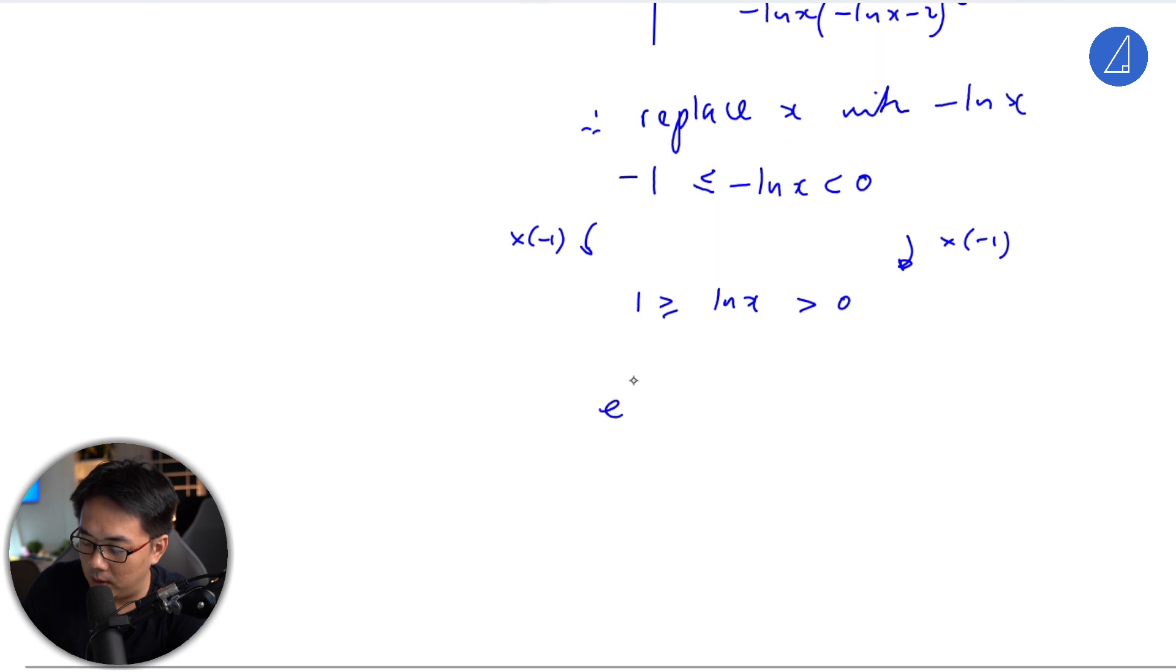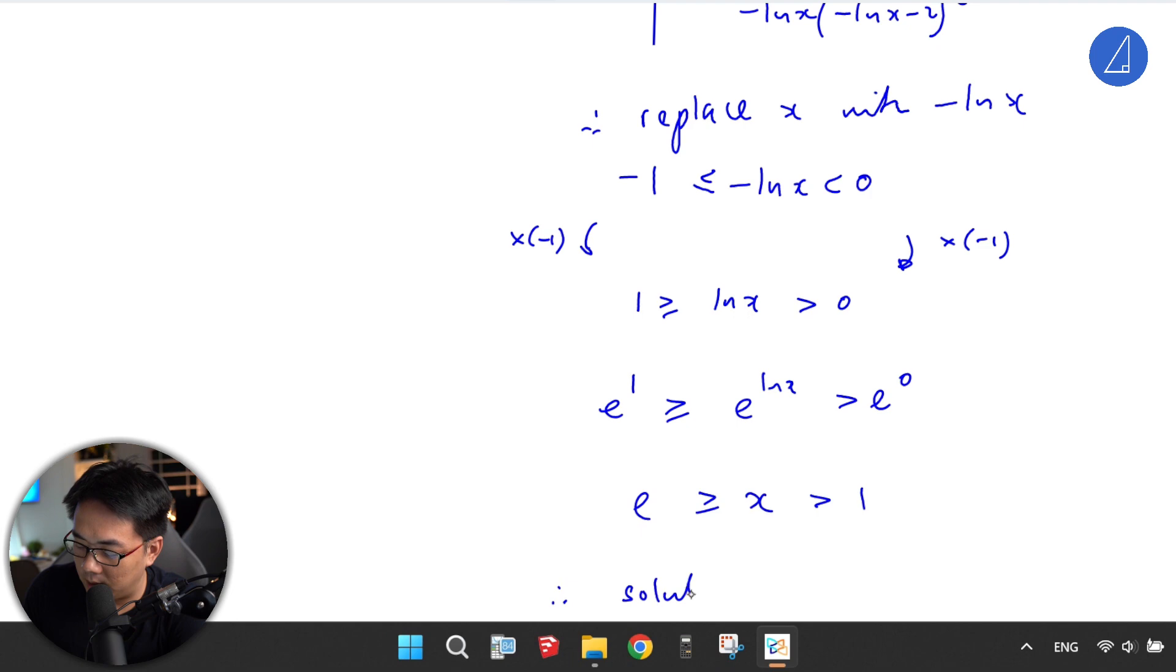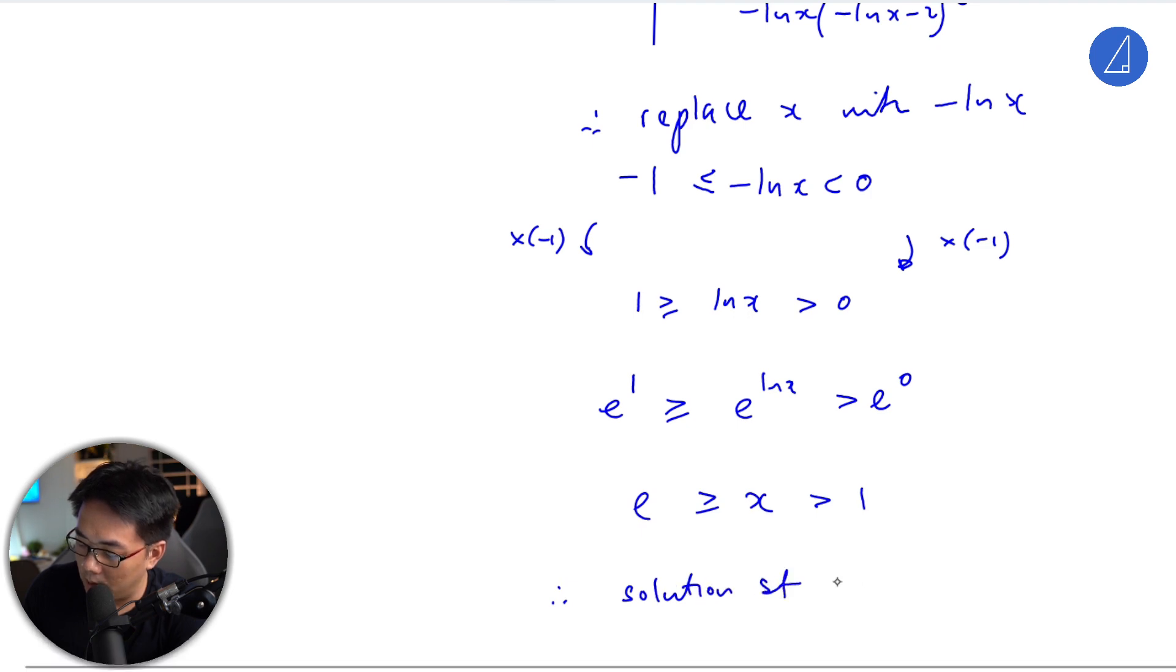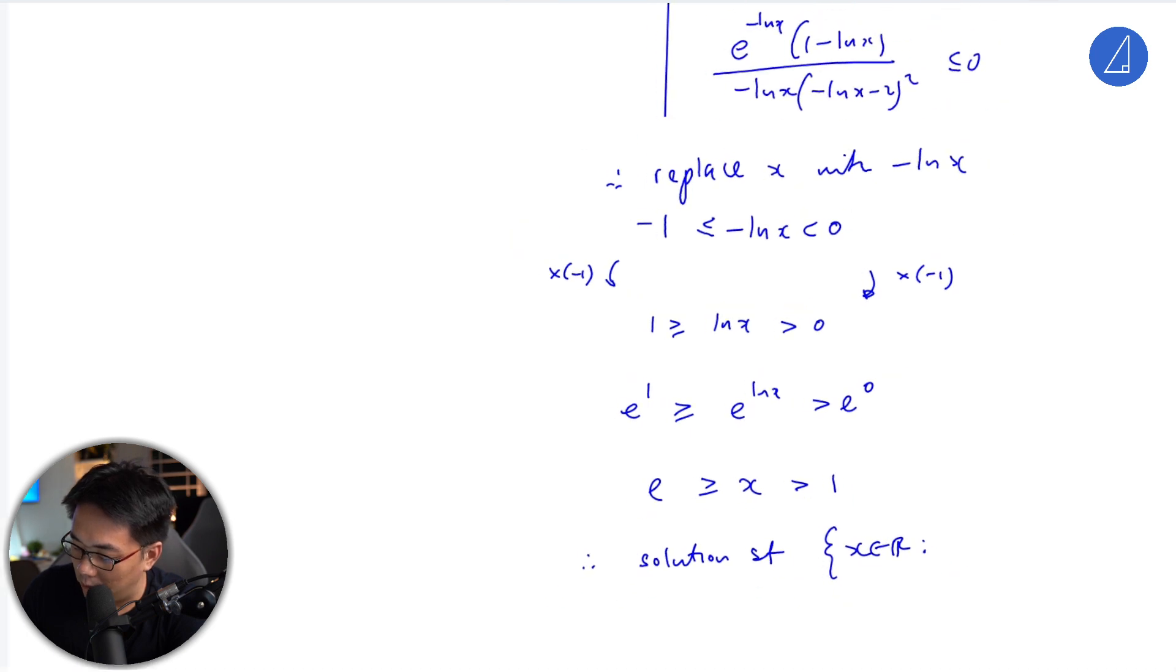Taking e to the power: e⁰ equals one, and e¹ equals e. Since e^(ln x) equals x, the solution set for the second part will be one less than x less than e.